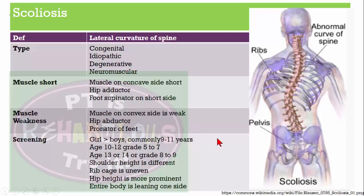Scoliosis screening in schools should start for children in fifth to seventh grade (age 10 to 12), with the last screening age being 13 to 14, in grade 8 or 9. Signs include: shoulder height is different, rib cage is uneven, hip height is different, the deformity is more prominent on one side, and the entire body leans to one side.